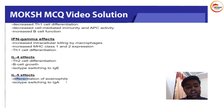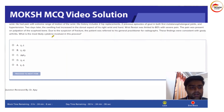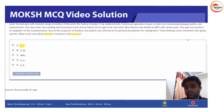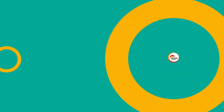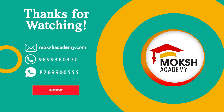IL-5 is involved in isotype switching to IgA. Since this question is asking about the cytokine involved in acute inflammation, the answer is interleukin-1. Thanks for watching — please give a thumbs up and subscribe for more.